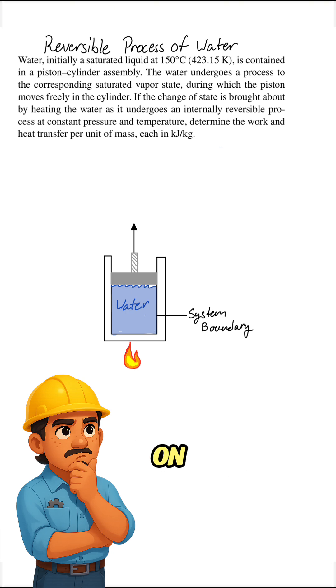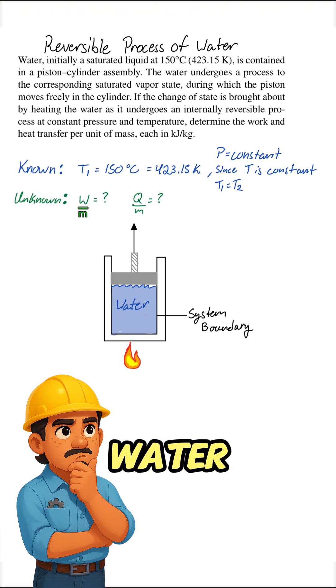Pause and read the problem on screen. Then let's solve it step by step. Here's what's given. Water starts as a saturated liquid at 150 degrees Celsius. The process is internally reversible at constant pressure and temperature. The question asks us to find the work done and the heat transfer per unit mass.